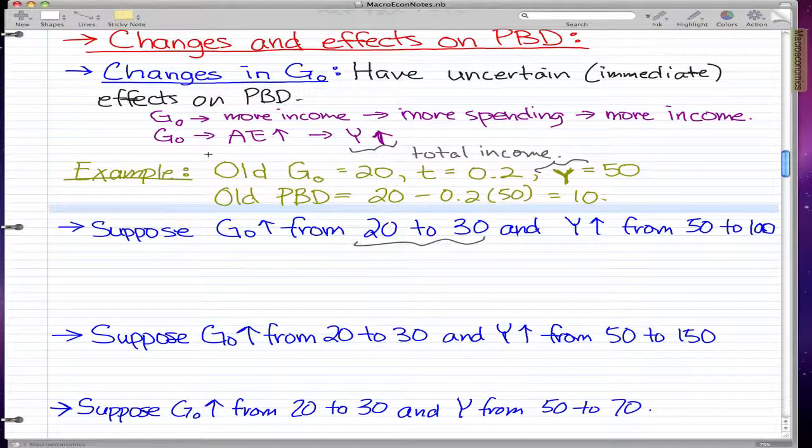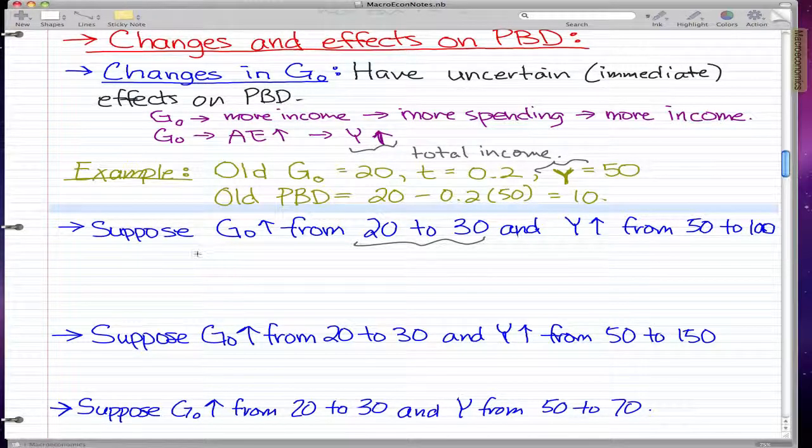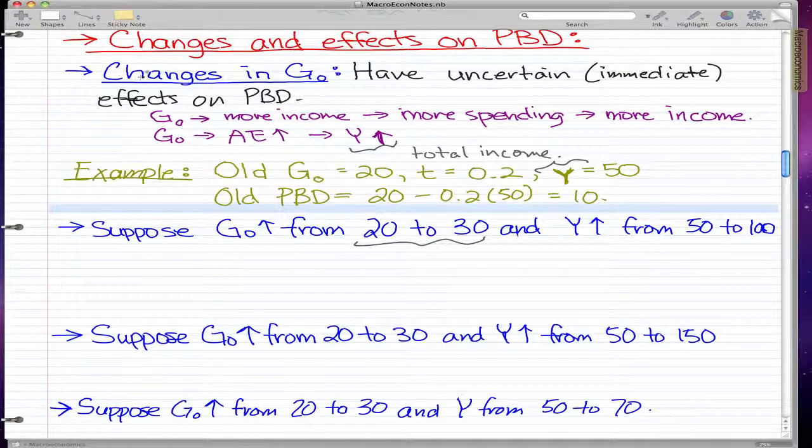This video focuses on changes and effects on primary budget deficit. It might start out to be a bit confusing, but I hope that it will become less confusing at the end of the video. We're going to start off talking about how changes in government spending have uncertain immediate effects on primary budget deficit.